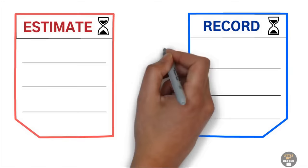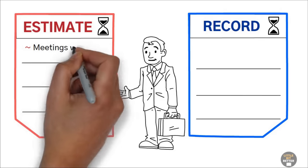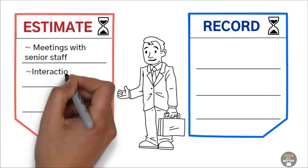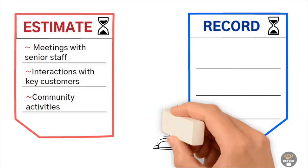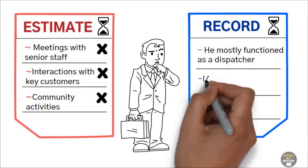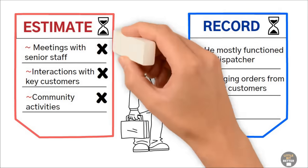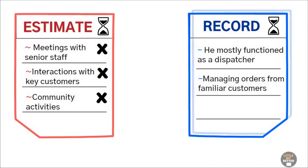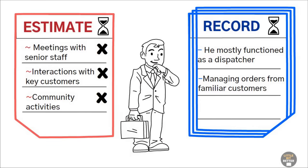For example, one company chairman was convinced his time was evenly split among three areas. Meetings with senior staff, interactions with key customers, and community activities. However, a six-week time record revealed that he almost never engaged in these priorities. Instead, he mostly functioned as a dispatcher, managing orders from familiar customers. When he saw the results, he was in disbelief. It took three time records to convince him that only records can be trusted, not the memory.